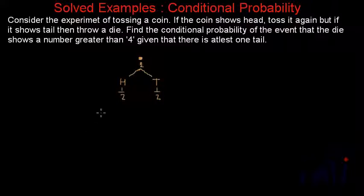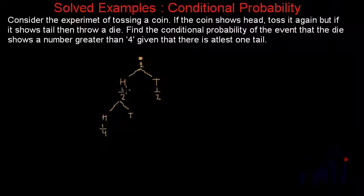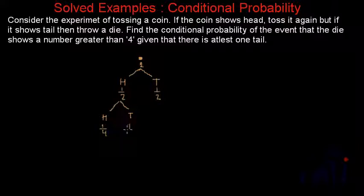And if we get a head, we have to toss the coin again. So again we can either get a head or a tail. The probability of getting a head in the second toss is 1/4 — that is the probability of the parent node divided by the total number of equally probable children. Here we have 2 children and the parent node probability is 1/2, so half of 1/2 is 1/4. Similarly, the probability of getting a tail in the second toss will also be 1/4.